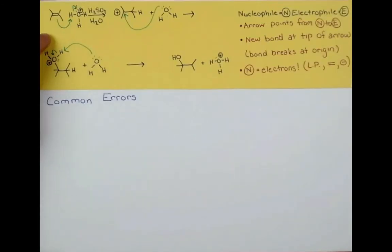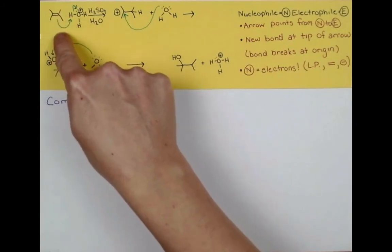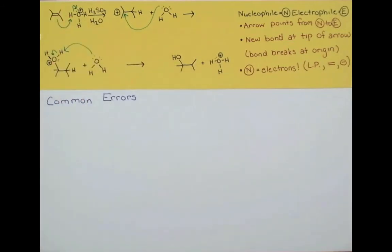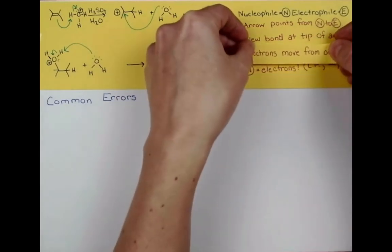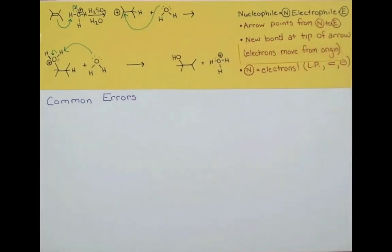All right, let's return to our acid catalyzed hydration mechanism to go into our common errors. And I want to just sort of correct one thing here. I said the bond breaks at the origin of the arrow and that's sometimes true, like in this case where we're showing this bond opening up a double bond. But really it might be a little bit more correct to say that the electrons move away from the origin. So let's update our rule to say that and it'll be a little bit more correct here. Okay, this first one is pretty bad, not attacking with the nucleophile.